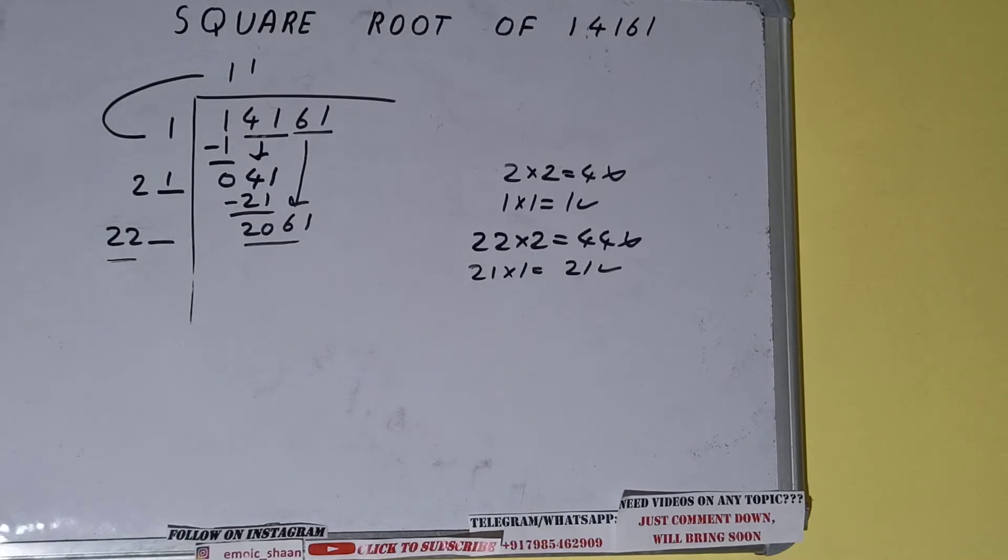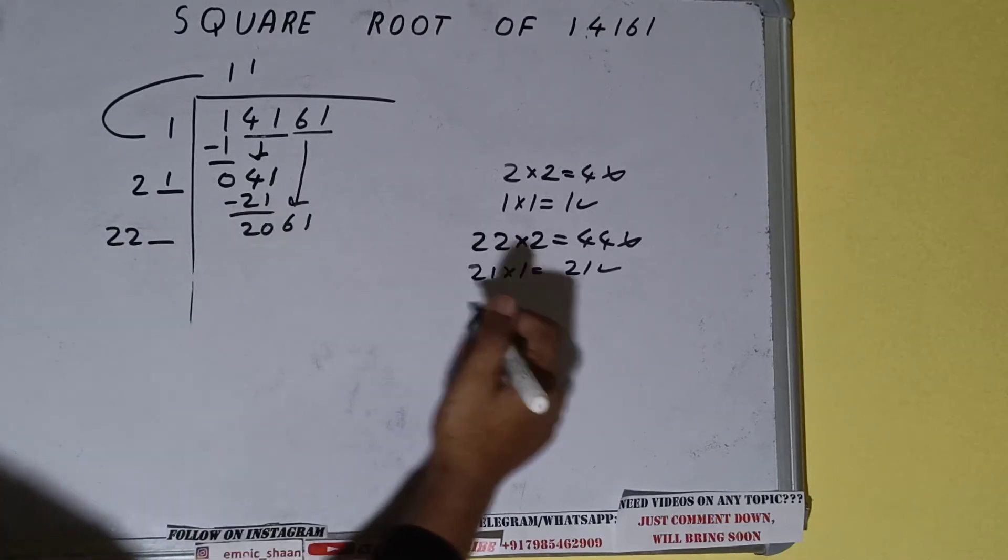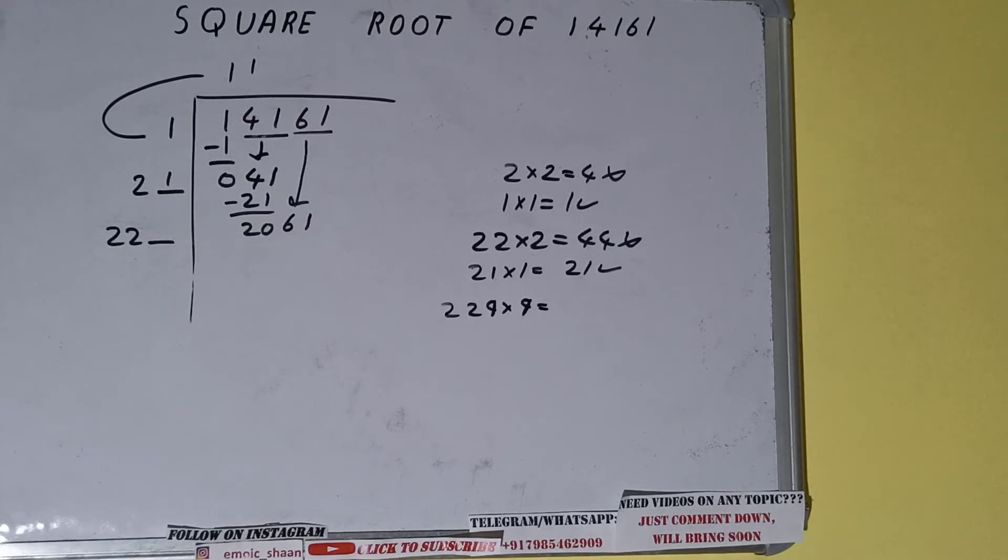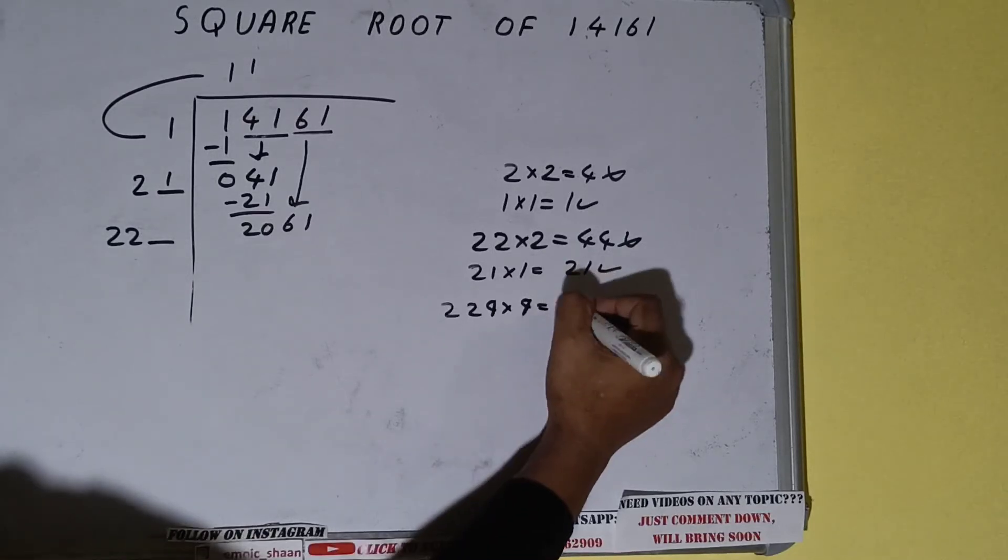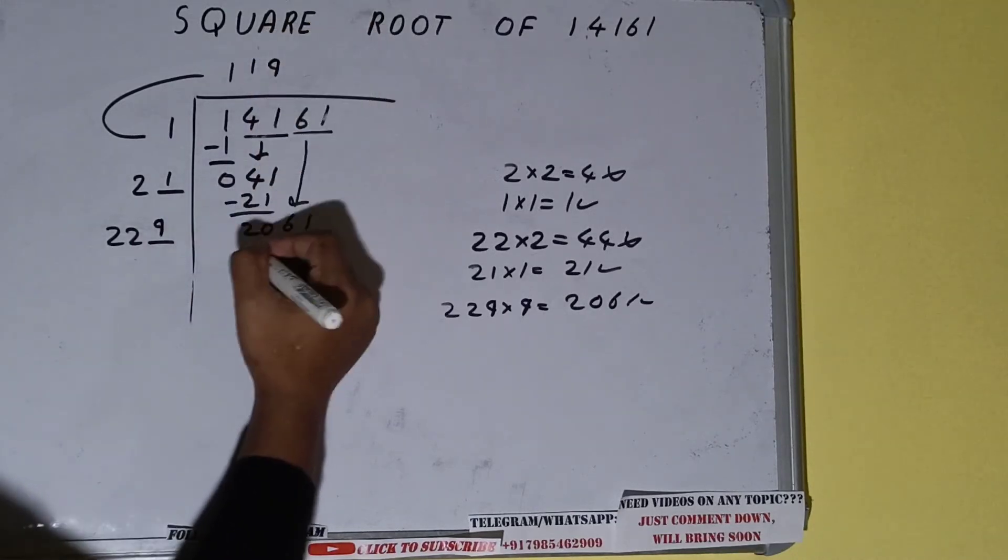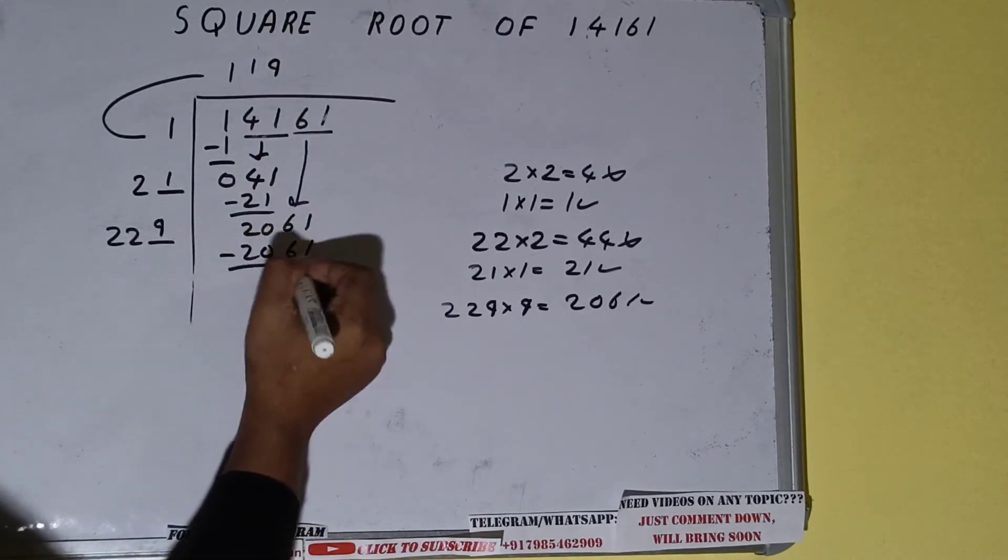So 22 nine times is 198, so we can try 9 times. So 229 into 9 we can try. It will be 2061, which is good to take.